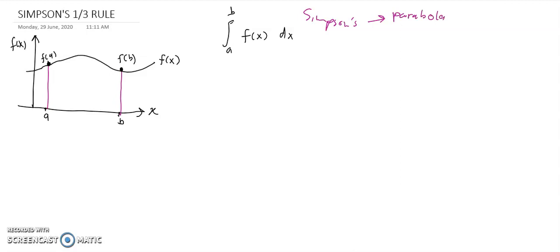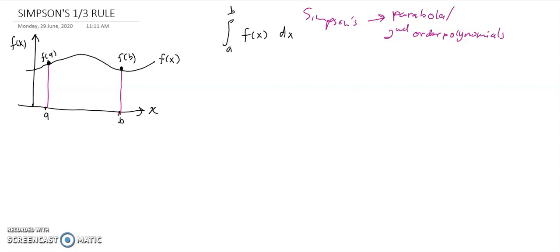To draw a second-order polynomial, we must have three data points. In the illustration, we only have two data points, so the third point is the midpoint between A and B. The formula for this midpoint is (A + B) / 2, and we can find the corresponding Y value, which is F of (A + B) / 2. Now we have three data points on our Fx.